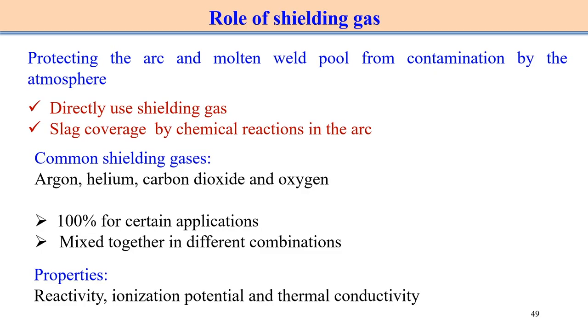Therefore, it is very common to utilize some kind of sealing of the molten pool during the welding process. Common sealing gases we can directly use are argon and helium, because these are inert gases — they protect the molten metal and remain non-reactive even at high temperatures. That is how argon and helium are used as the most common sealing gases associated with the arc welding process.